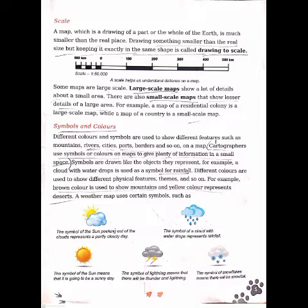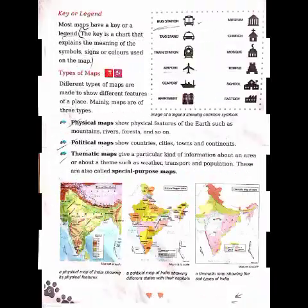The first symbol is the sun peeking out of clouds, which represents a cloudy day. The second symbol is a cloud with raindrops, representing rainfall. The third symbol is a full sun, meaning a very sunny day. The fourth symbol is a cloud with lightning, representing thunder and lightning. The fifth symbol is a cloud with snowflakes, representing snowfall.